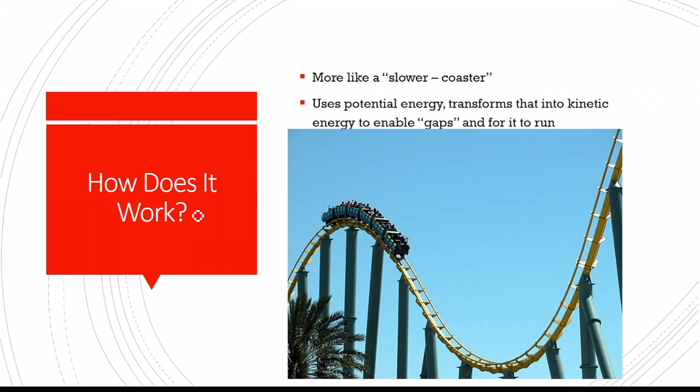So how does a roller coaster work? Talking Science Olympiad wise, you want it to be slower due to the time range, which we'll be talking about later. But a roller coaster uses potential energy and transforms that into kinetic energy to enable gaps and for it to run.